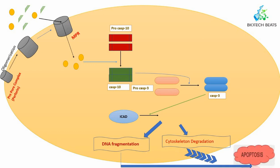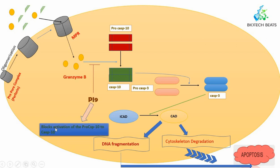However, there is also a regulator for this reaction: PI9. PI9 is the regulator that controls activation of procaspase-10 to caspase-10. PI9 blocks the activation of procaspase-10 to caspase-10, thereby inhibiting this step of the apoptosis process.